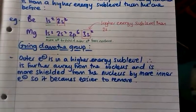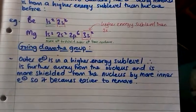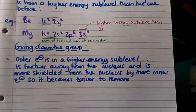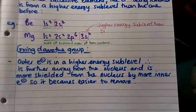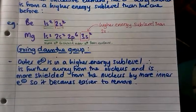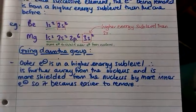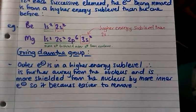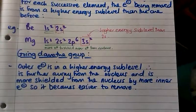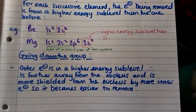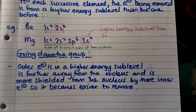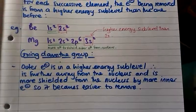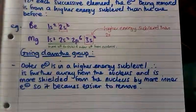To summarise: going down the group, the outer electron is in a higher energy sublevel, so it's further away from the nucleus and it's more shielded from the nucleus by more inner electrons. So it becomes easier to remove, and that's why the ionization energy decreases going down a group.